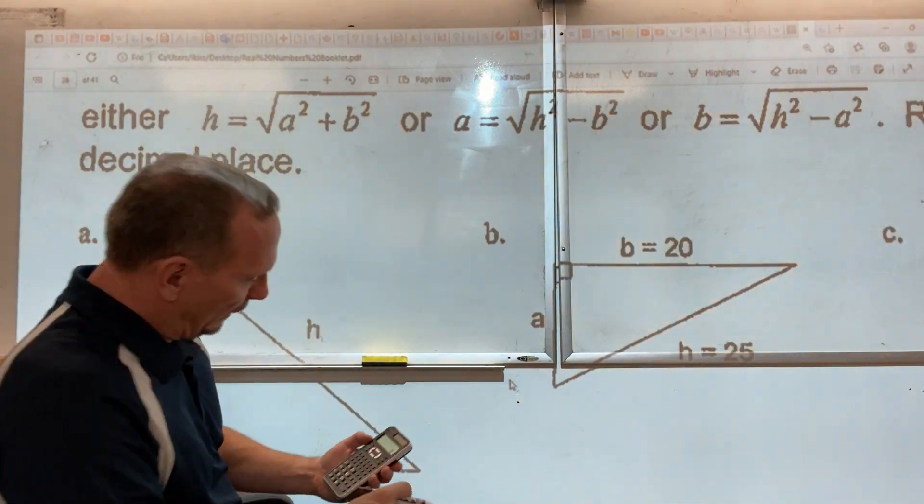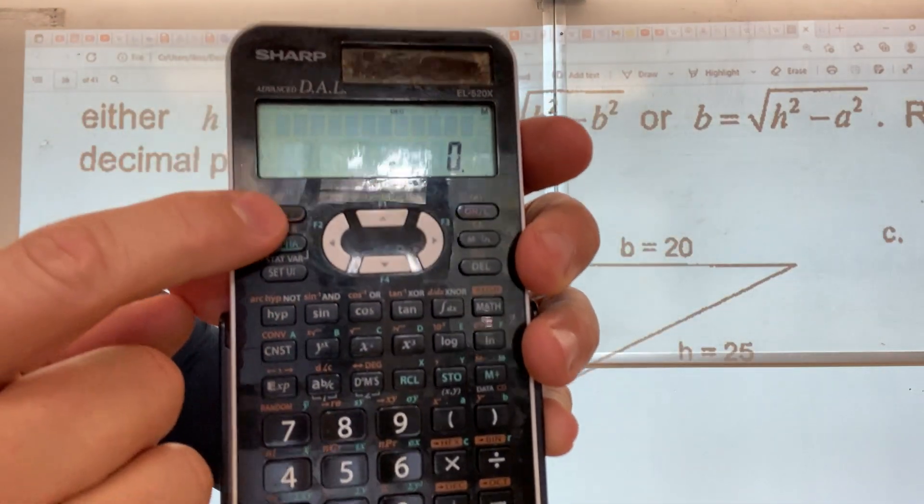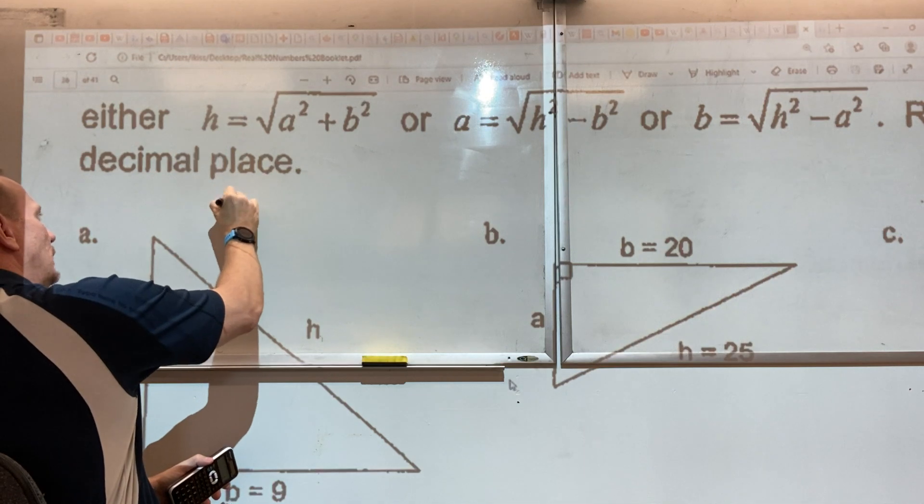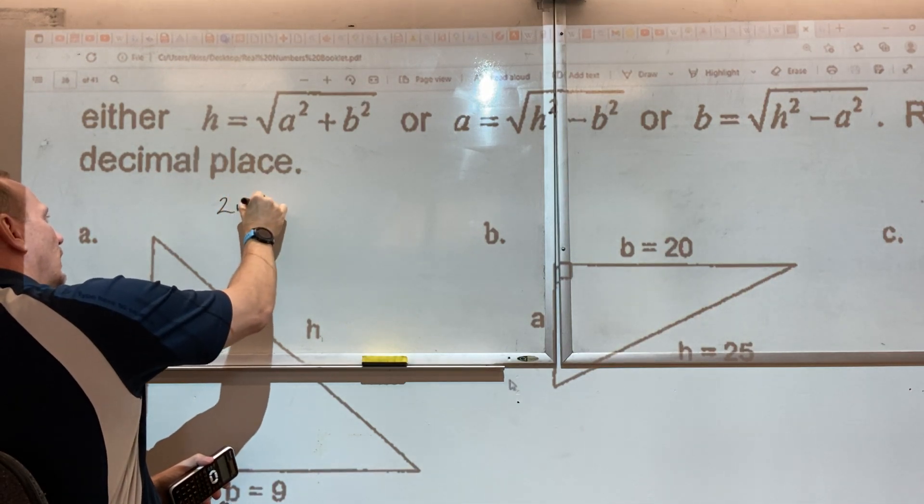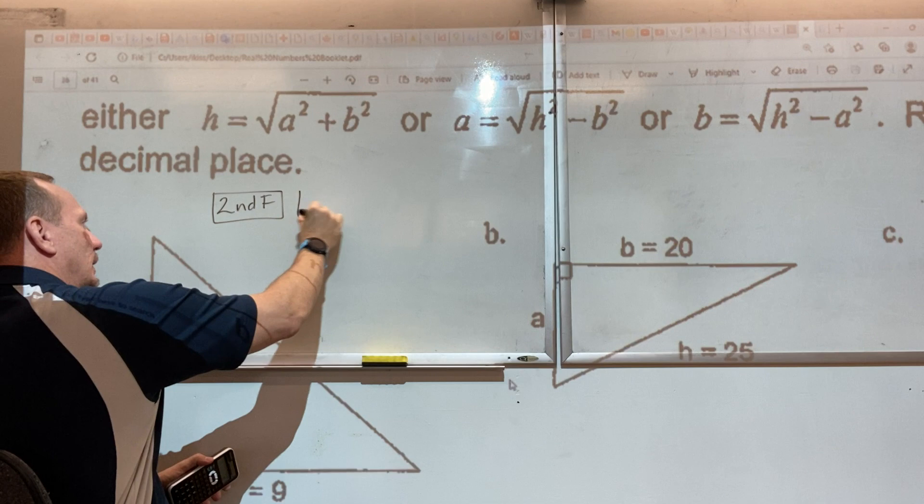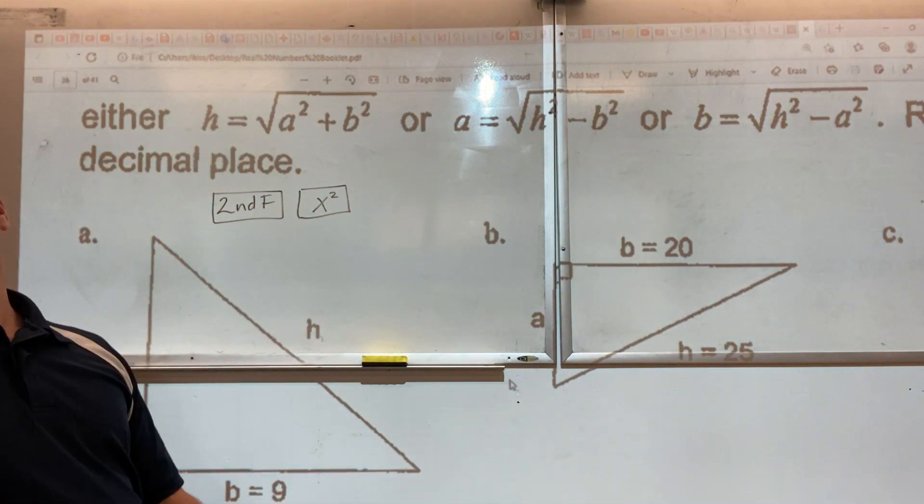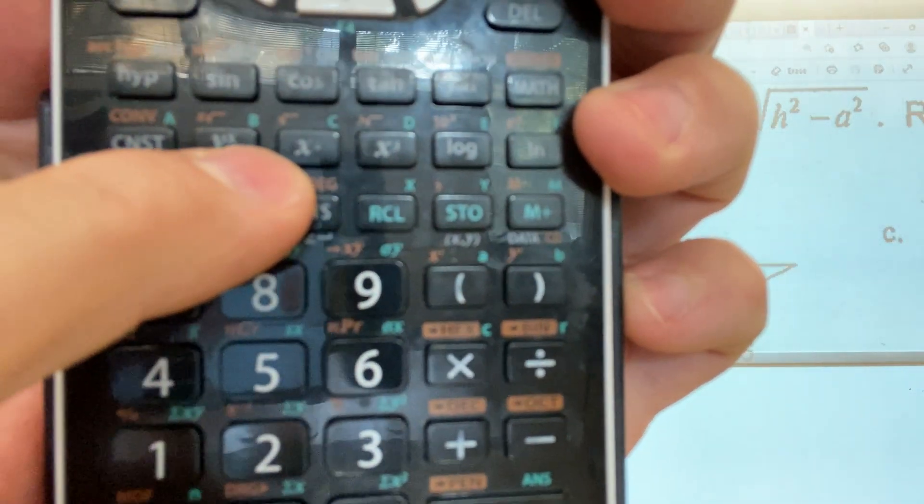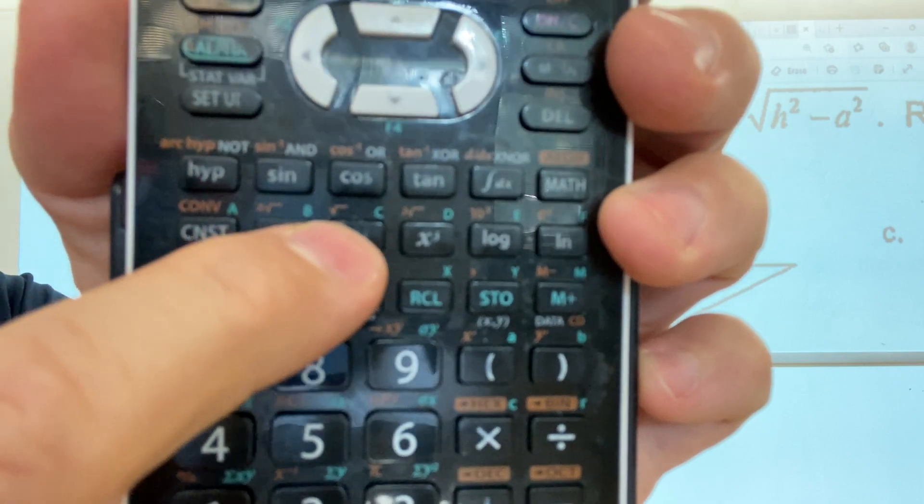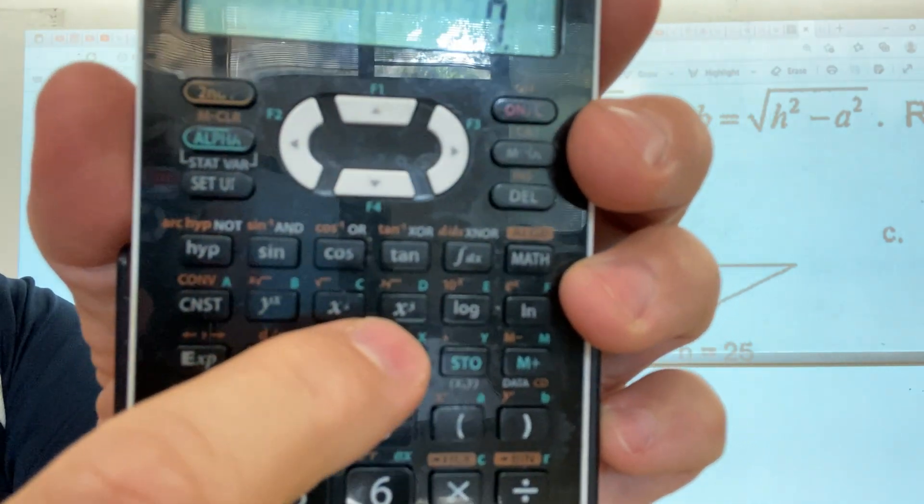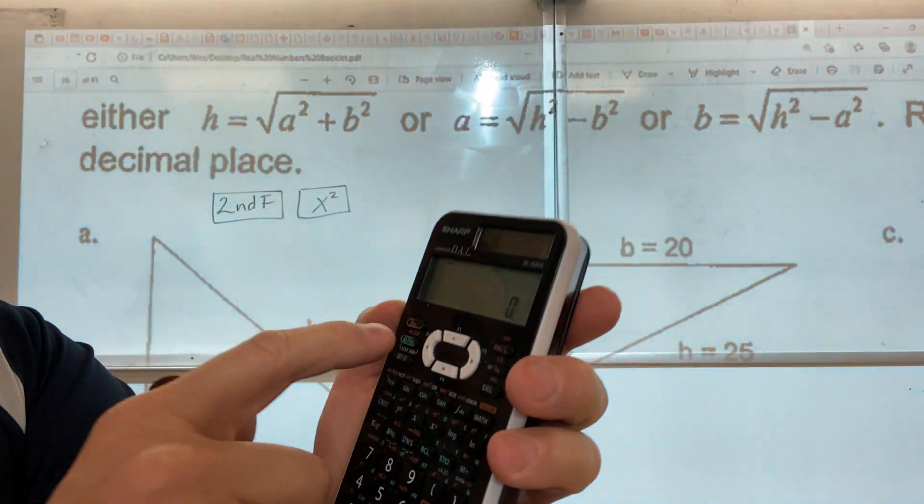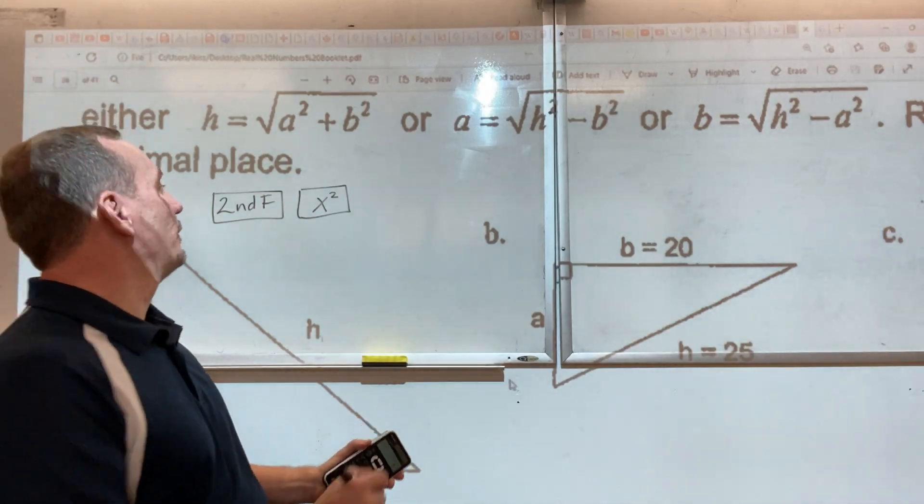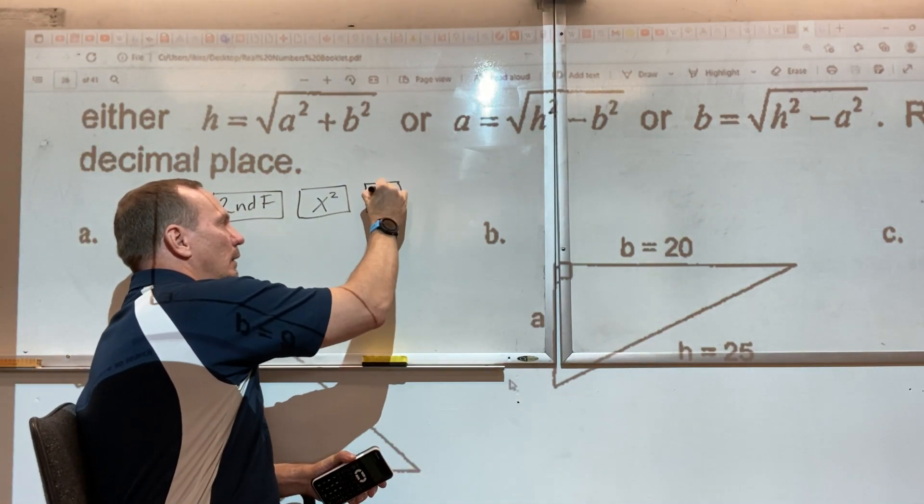On a calculator there is a second function button. When you press it, that's all that happens. You press second function, and then the next button is this one. You can call it the X² button. It's squaring things, and you can see the square root, cubing, and cube root. So second function, open the square root button.